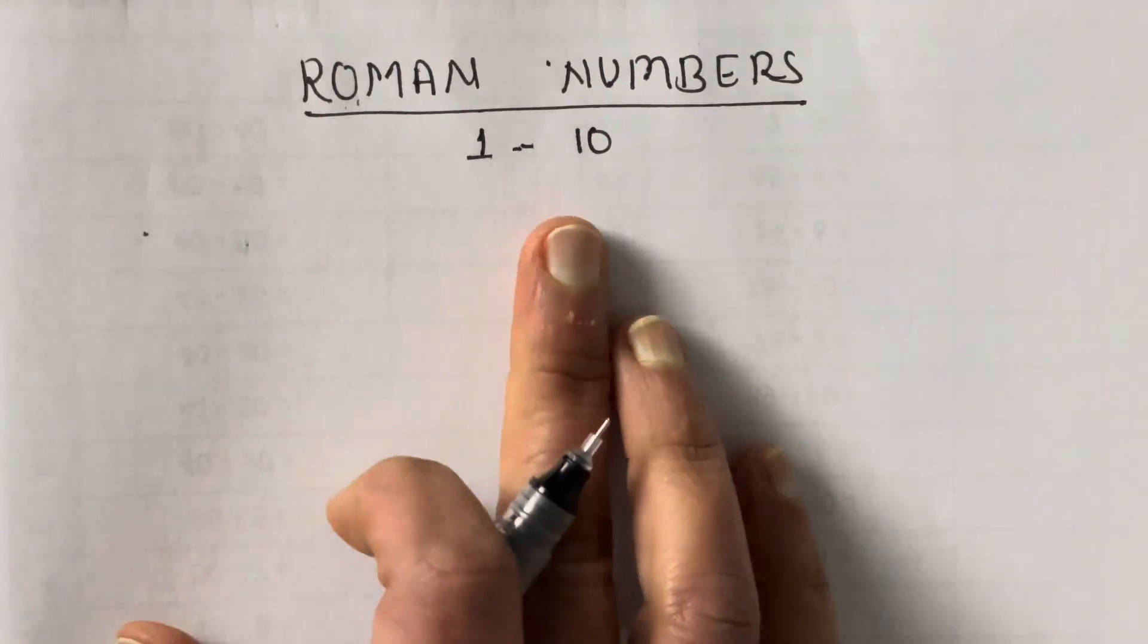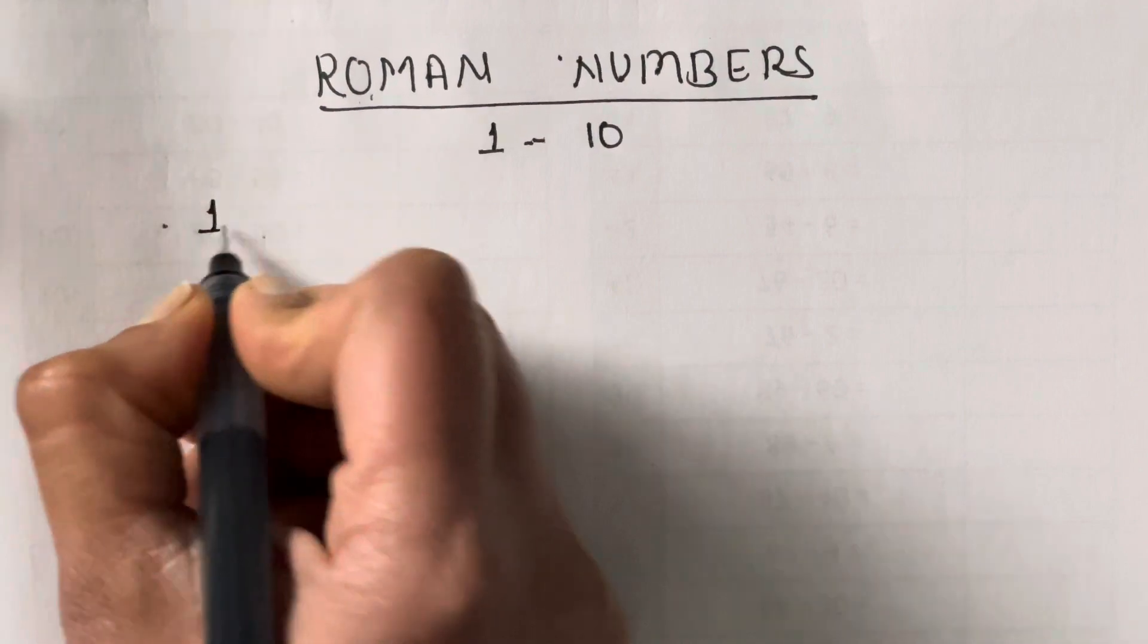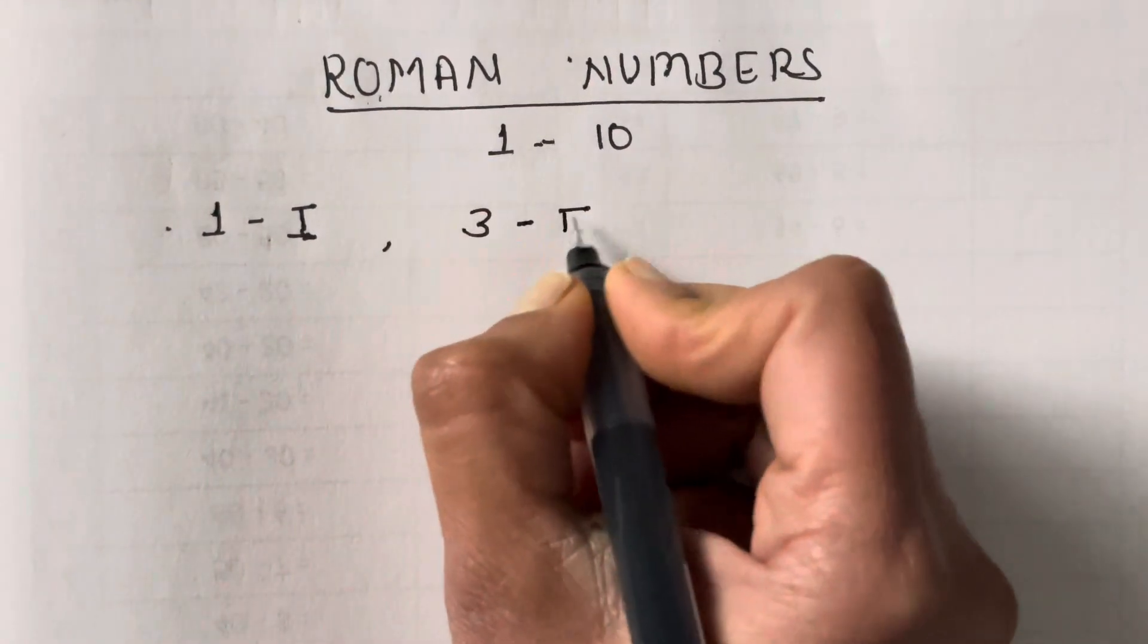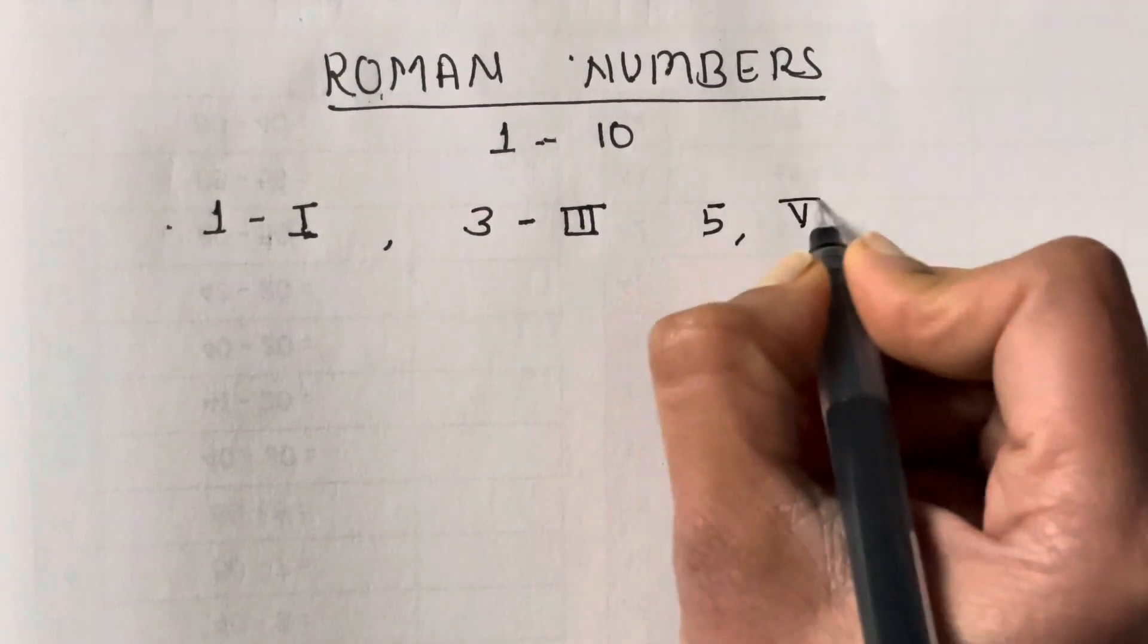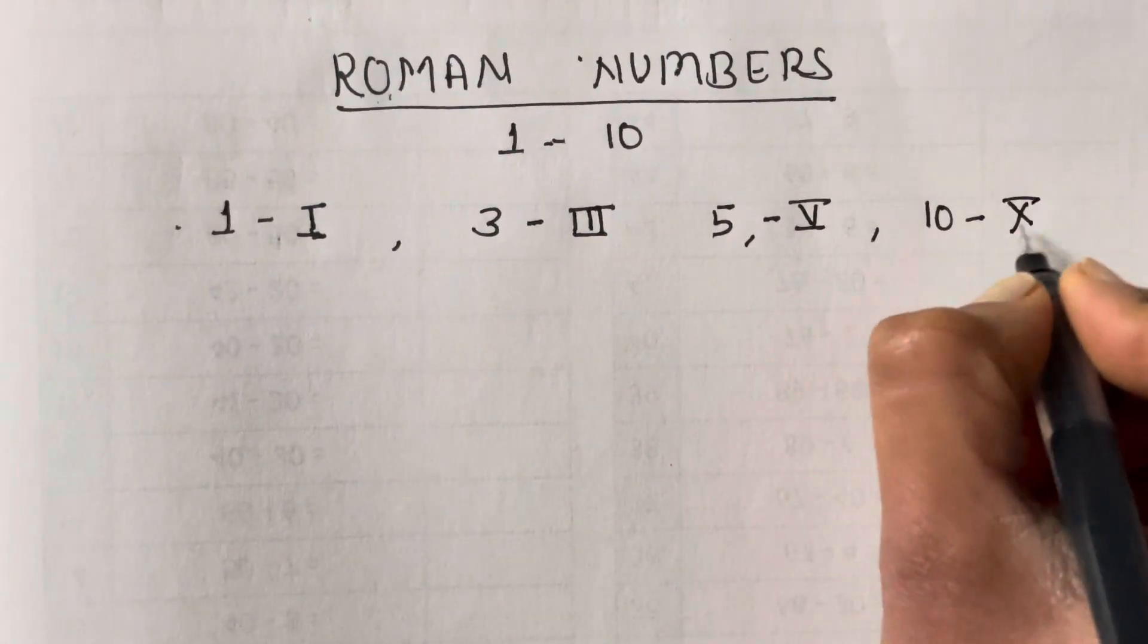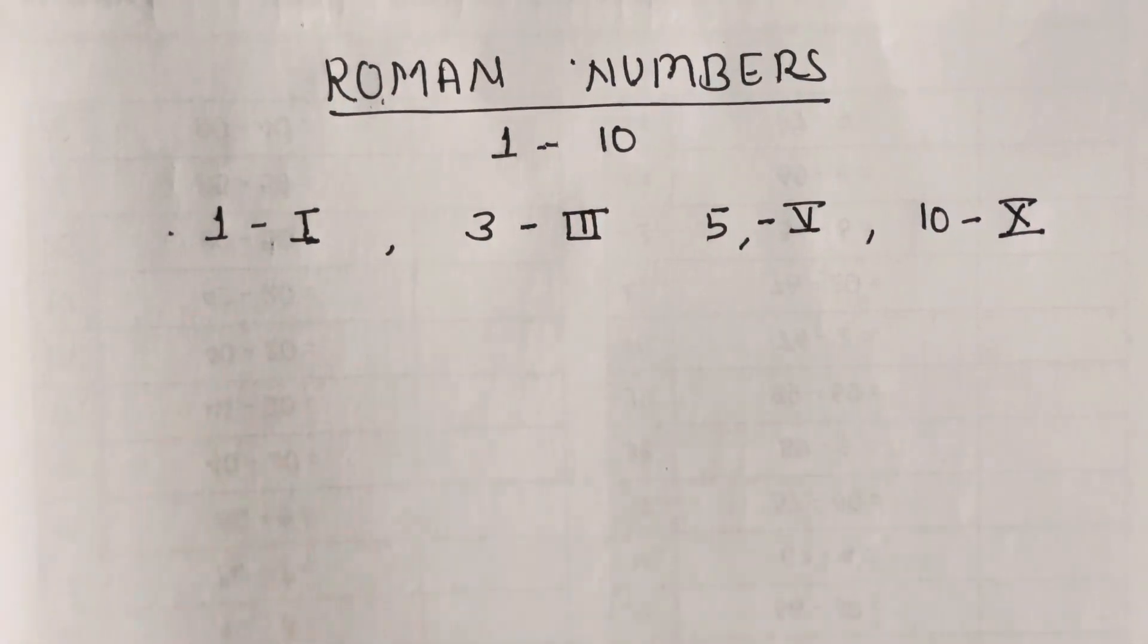Roman numbers from 1 to 10. Always remember: in Roman, 1 is I, 3 is III, 5 is V, and 10 is X. So there's a trick to remember Roman numbers. You can write from 1 to 1000 and whatever number you want with these tricks.